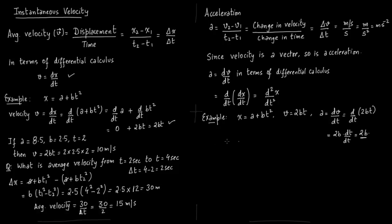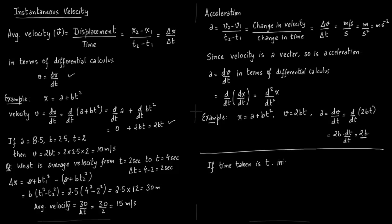So you can see how to compute acceleration: step 1 is to compute velocity by taking the derivative of position, then take the derivative with respect to time again to get acceleration. If the total time taken is t and initial velocity is v₀, then acceleration is (v − v₀) / t. Rearranging gives v = v₀ + at, which is one of the first equations of kinematics.